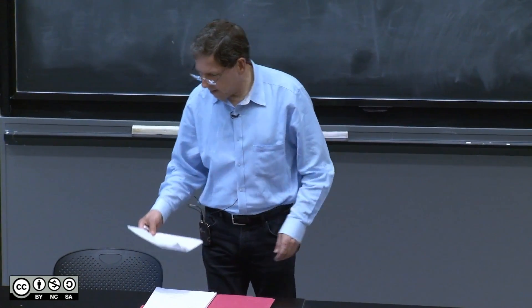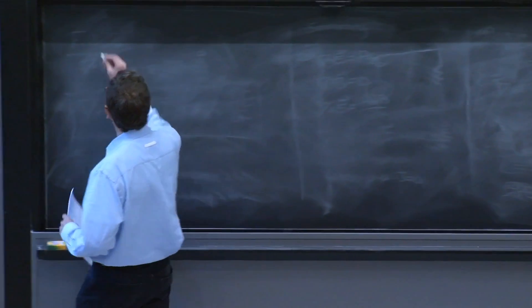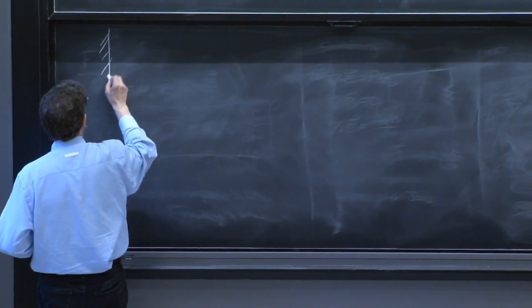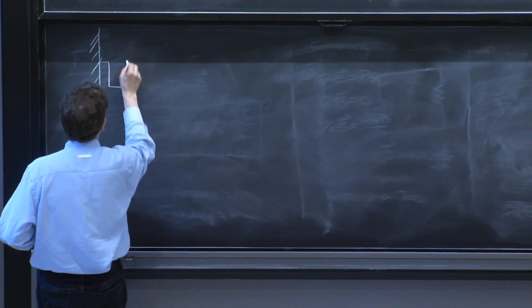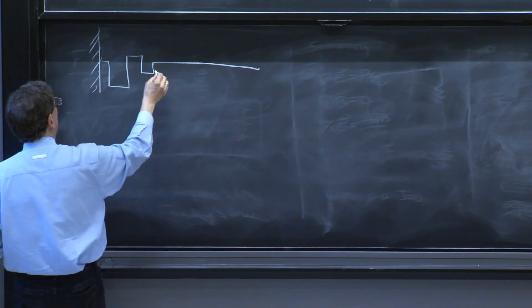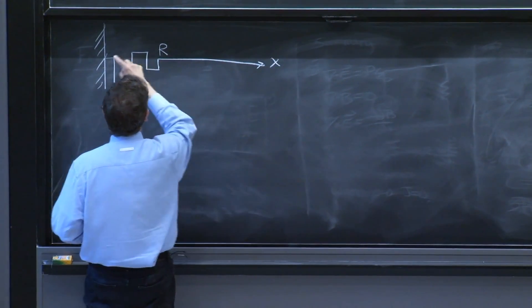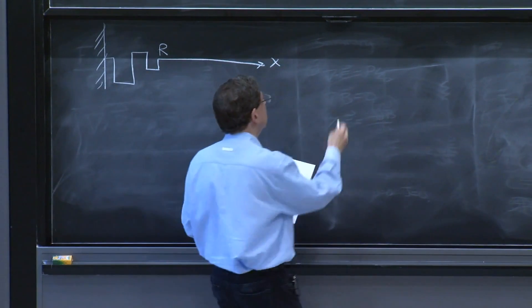I'll begin by reviewing quickly what we did last time. We considered what are called finite range potentials, in which over a distance r in the x-axis, there's a non-zero potential.